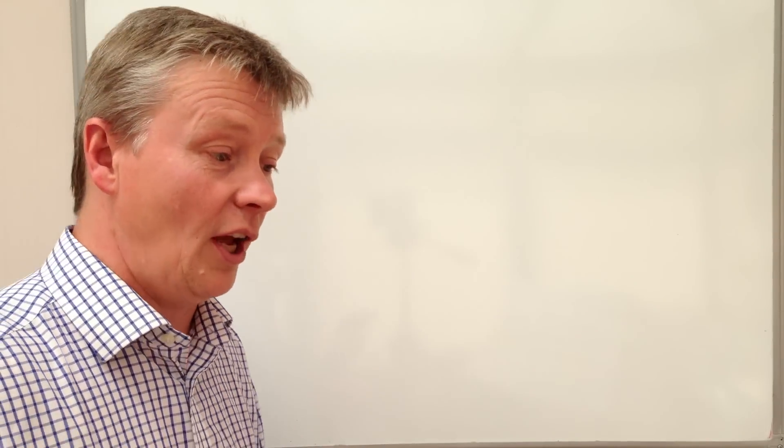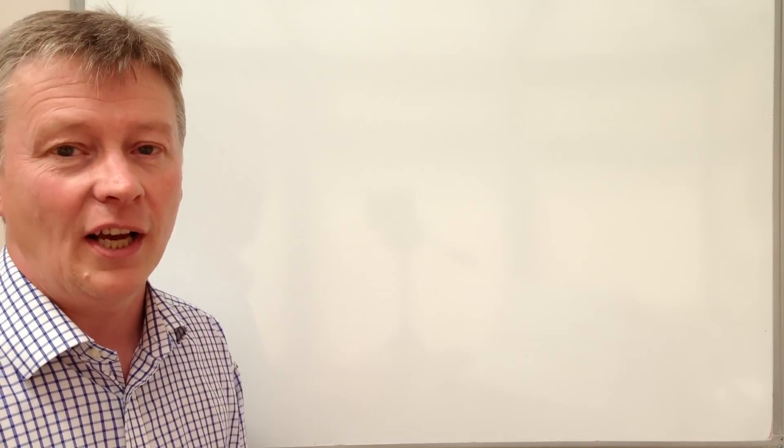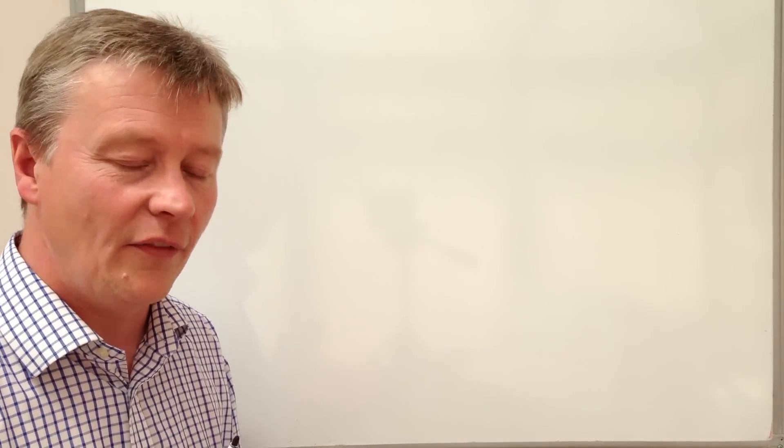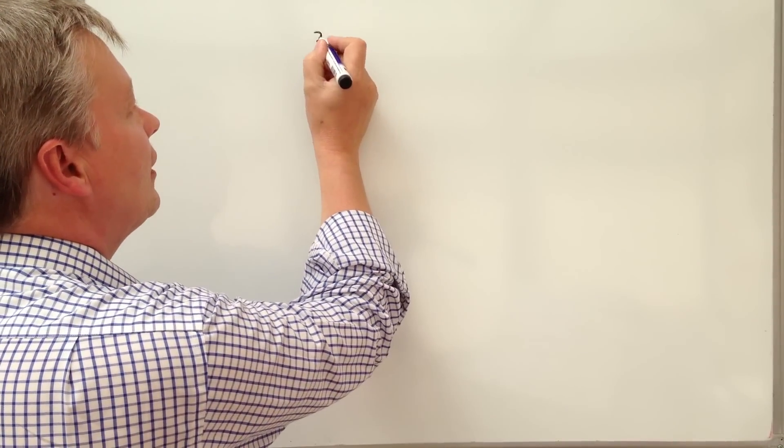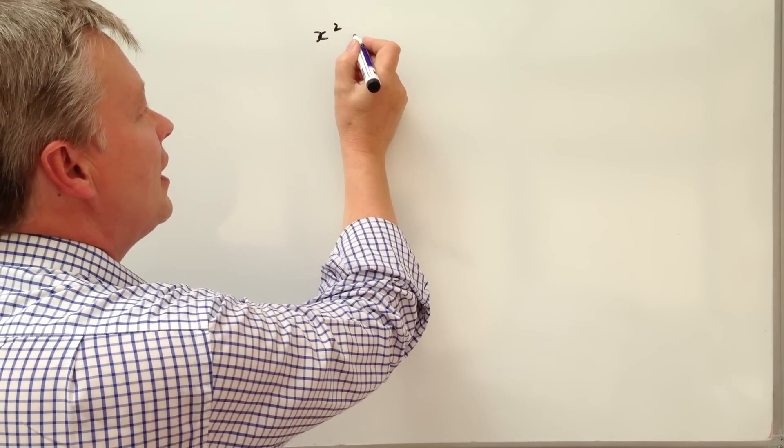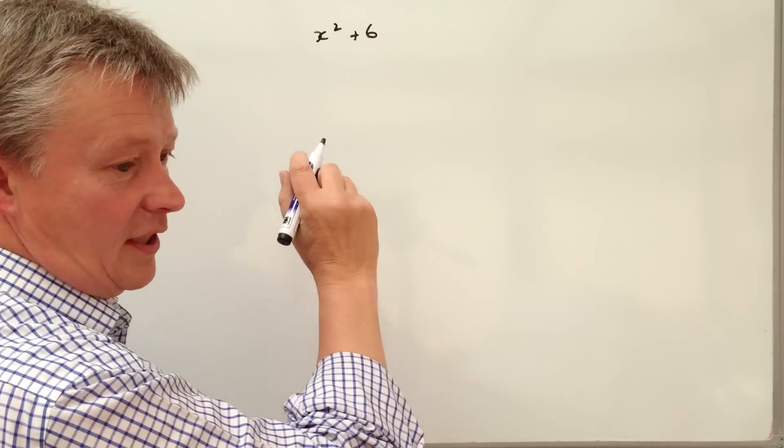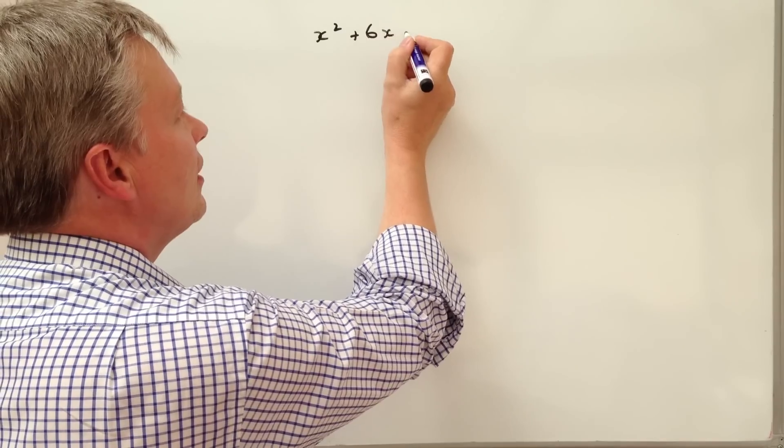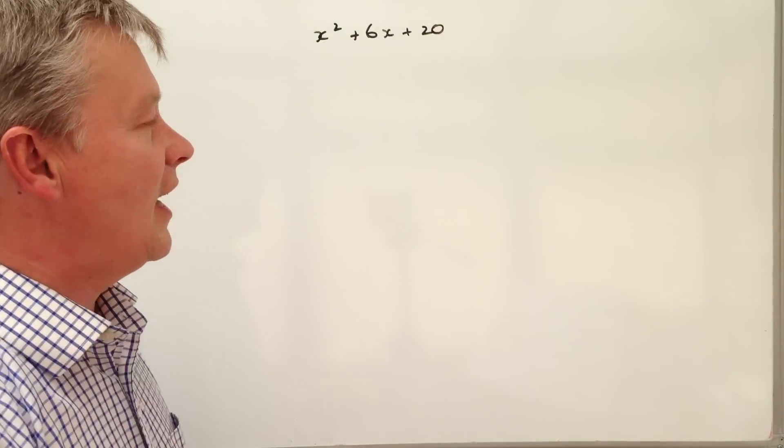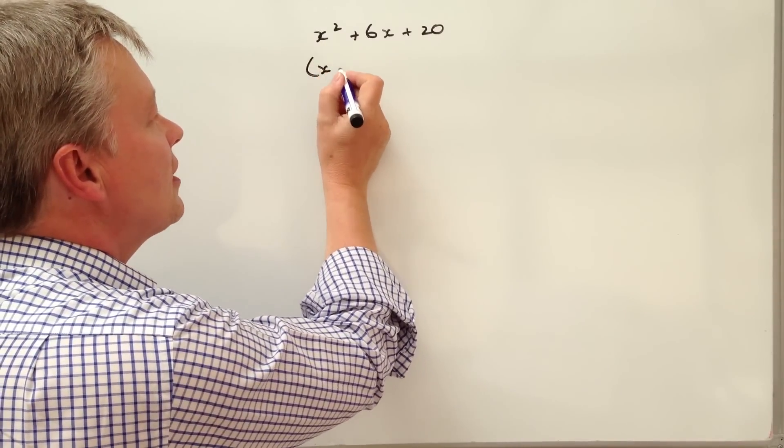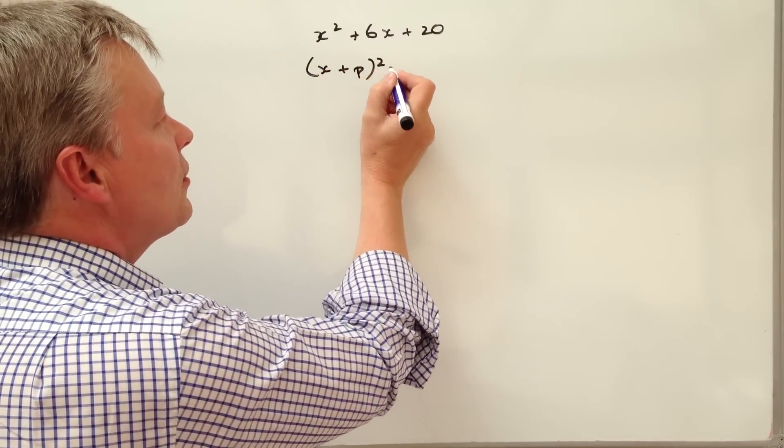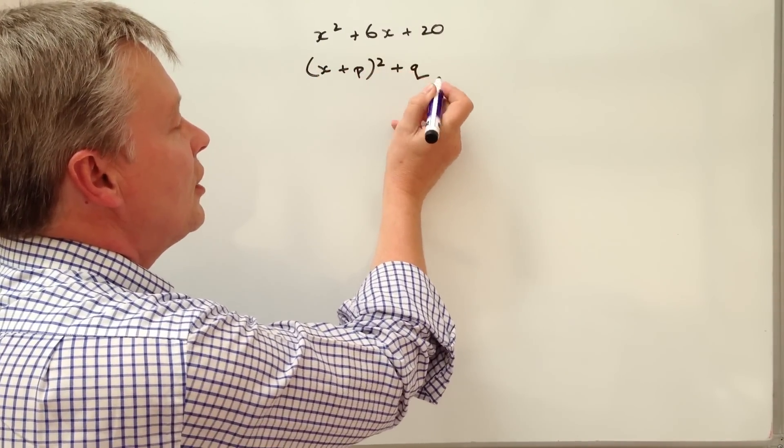So I'm going to give you an example of a typical GCSE question at this sort of level. And the quadratic equation is x squared plus 6x plus 20. And we're asked to write it in the form of x plus p squared plus q.